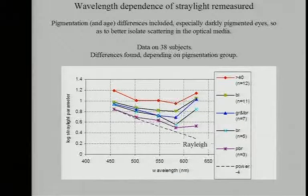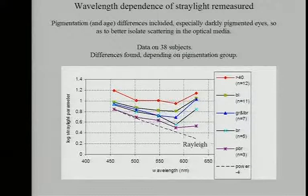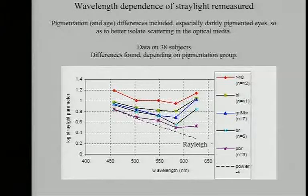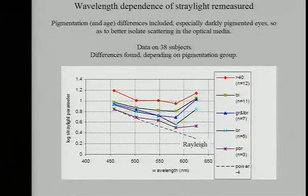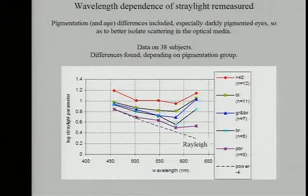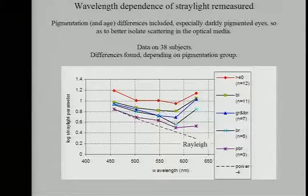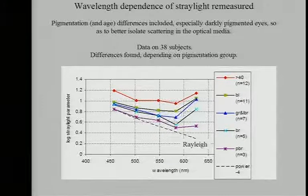This is what we found: wavelength dependence. This is the Rayleigh effect. Darkly pigmented individuals have less stray light, and it shows more or less the Rayleigh characteristic. But as the eye gets less pigmented, the red components come in and you get a kind of flat, horizontal behavior of light scattering in the eye.